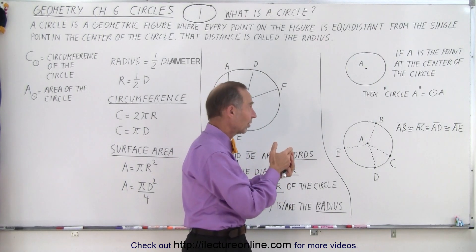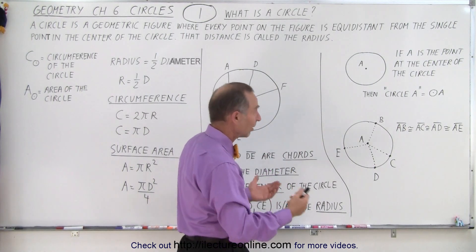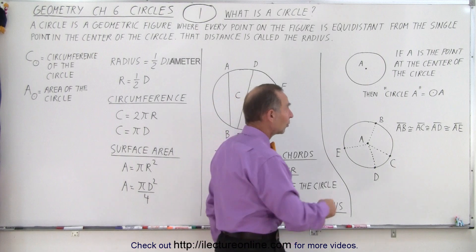which essentially defines the circle along with the radius. If you give the point at the center of the circle and the radius, you know everything there is to know essentially about the circle. We can also label it like this.